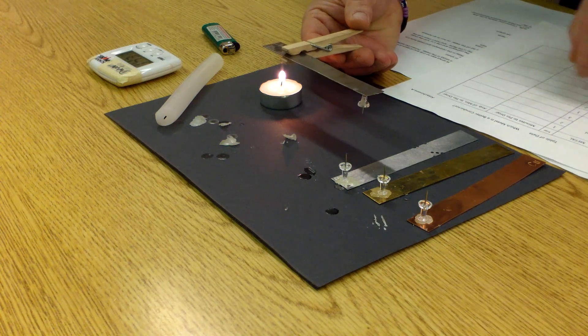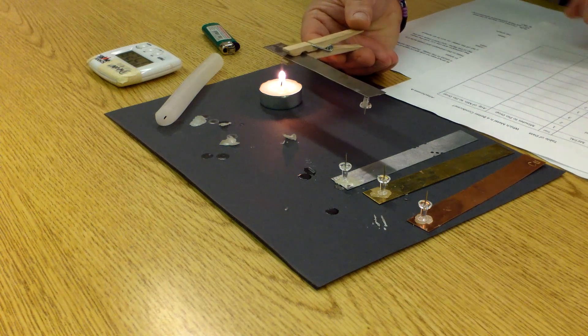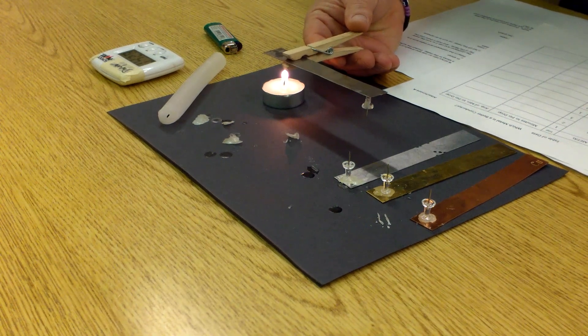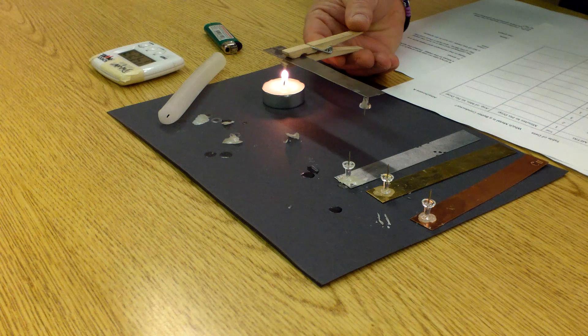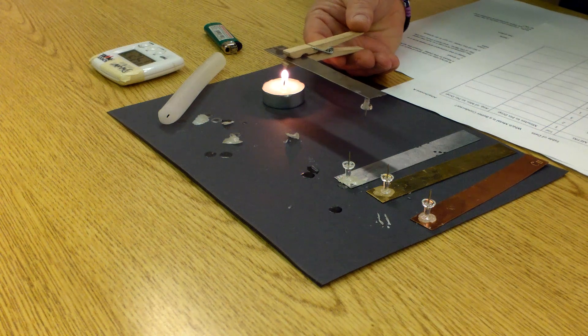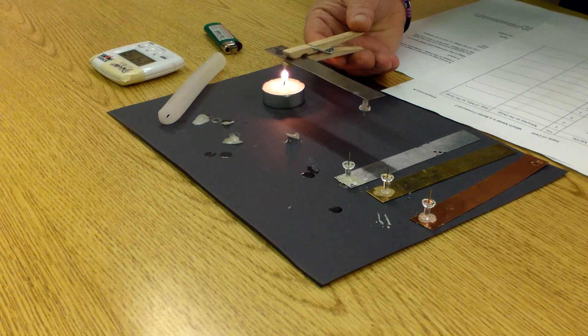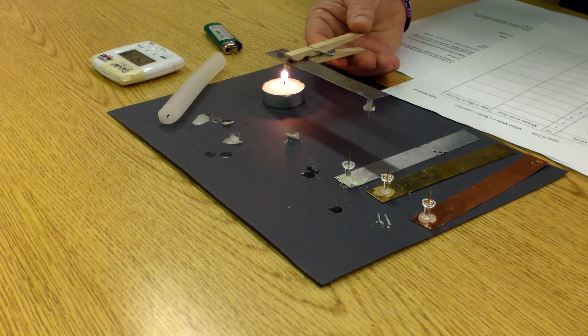So for steel, you're going to have a bar. Aluminum, you'll have a bar. Copper, you'll have a bar. And brass, you'll have a bar. Now, if I could fast forward this to some more minutes, you would see the pushpin fall off onto the paper. And that's at the point where you stop the timer and you figure out how much time has passed. And that's really just about it.